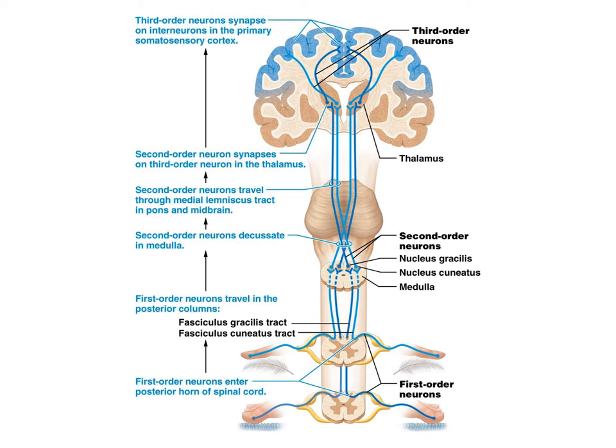Now let's look at the fasciculus gracilis tract — the dark blue one. The sensory receptors of the first order neurons extend up the spinal cord, synapse in the medulla, and decussate, crossing over. They then extend up and synapse in the thalamus, where a third order neuron continues to the cerebral cortex. These are two different examples of a sensory pathway and how it gets from the receptor to the cerebral cortex.